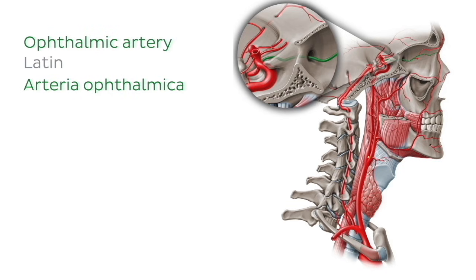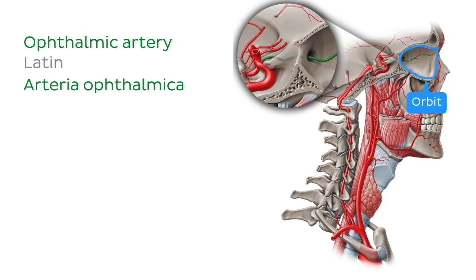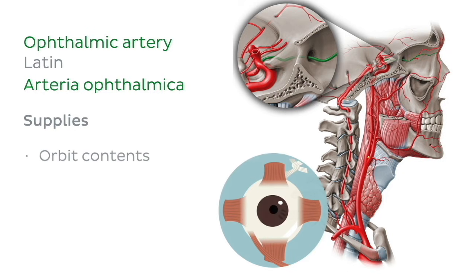The ophthalmic artery is next. This artery passes through the optic canal, ultimately entering the orbit. It travels along the medial wall of the orbit between the superior oblique and medial rectus muscles, supplying its contents.